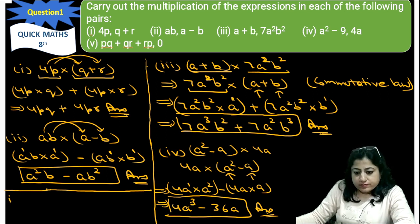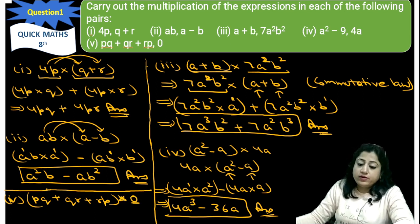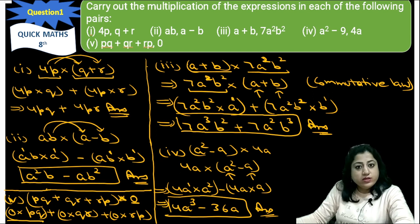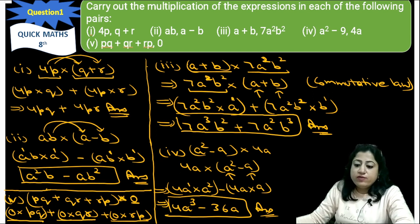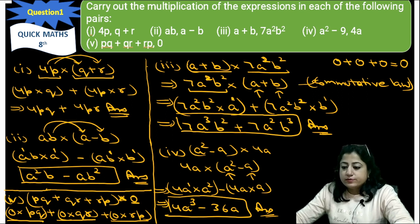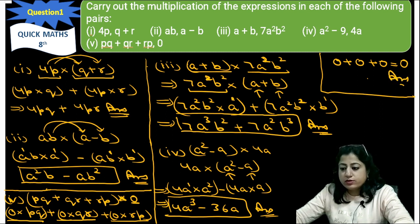Now the fifth part: (PQ + QR + RP) multiplied with 0. So 0 will multiply with each term — 0 × PQ, plus 0 × QR, plus 0 × RP. Obviously, 0 × PQ = 0, 0 × QR = 0, and 0 × RP = 0. So it will be 0 + 0 + 0 = 0. The answer for the fifth part is 0.